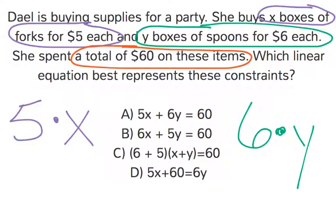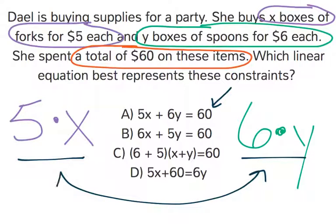All right, let's go through our answers and see which ones match up with what we have. A, 5X plus 6Y equals 60. That looks pretty good. It has a 5X, has a 6Y, and it has a total of 60 because these two added together should be the total. That looks great.